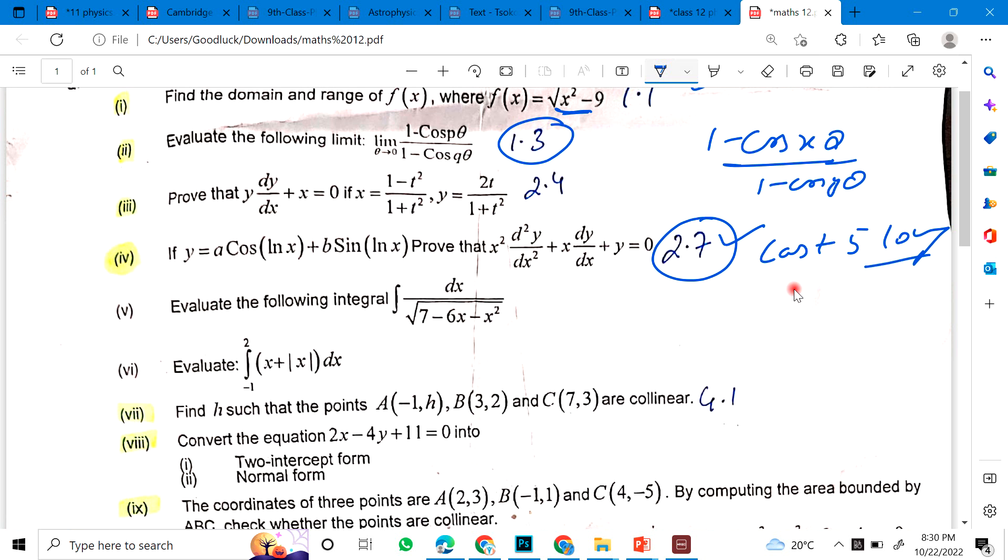Fifth is evaluate the following integral. This is your 3.3. Sixth is evaluate the following definite integral. This is definite integral, you have to know 3.6, you can see.